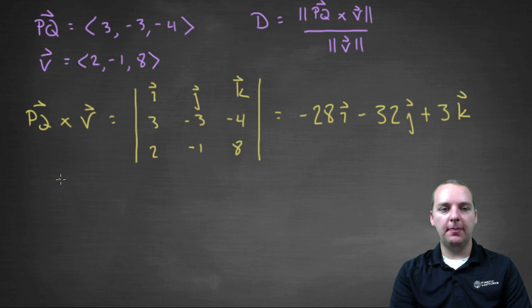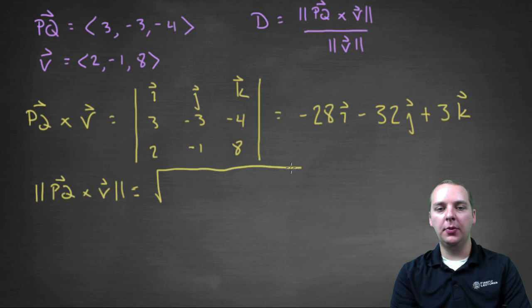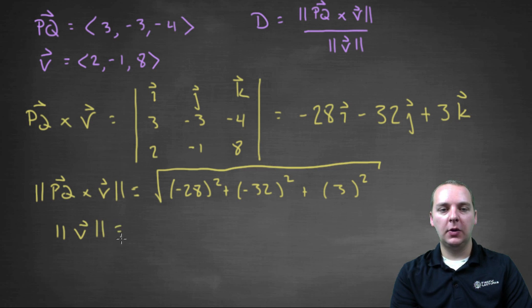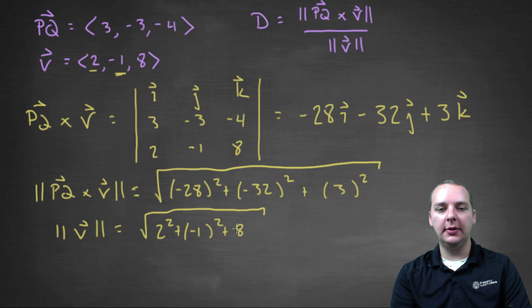Alright, there's the cross product, and now what I need to do is take the magnitude of the cross product, which will be the big square root of negative twenty-eight squared, plus negative thirty-two squared, plus three squared. And then we're going to take the magnitude of V, which will be the square root of two squared, plus negative one squared, coming from here, and plus eight squared.